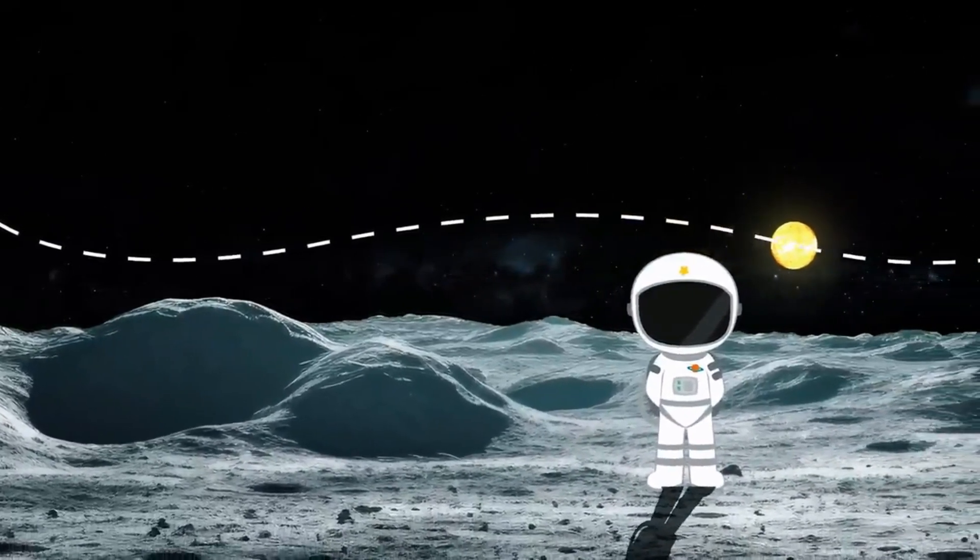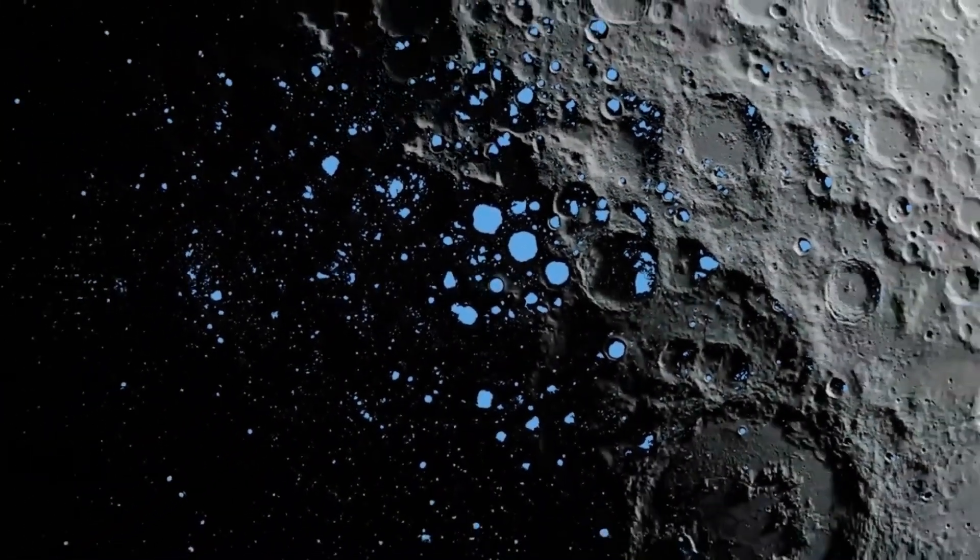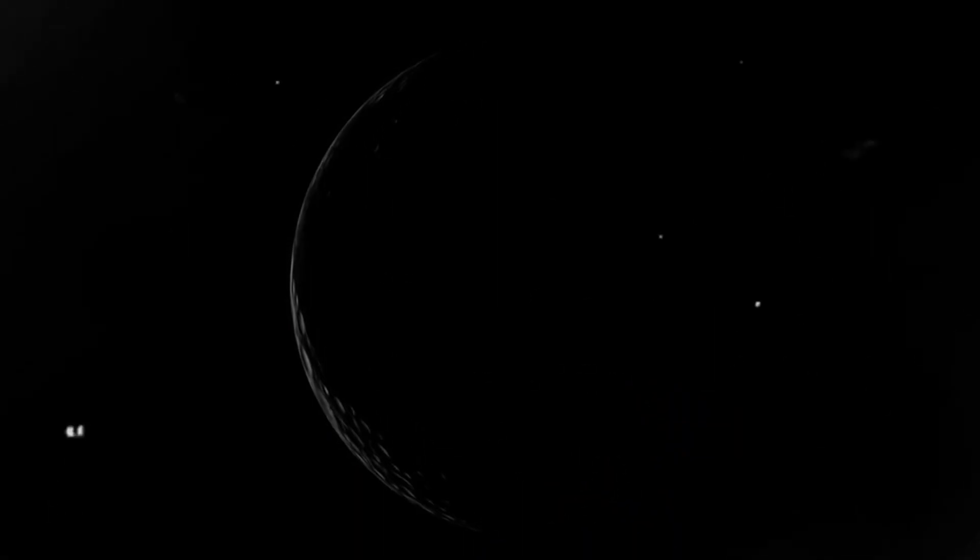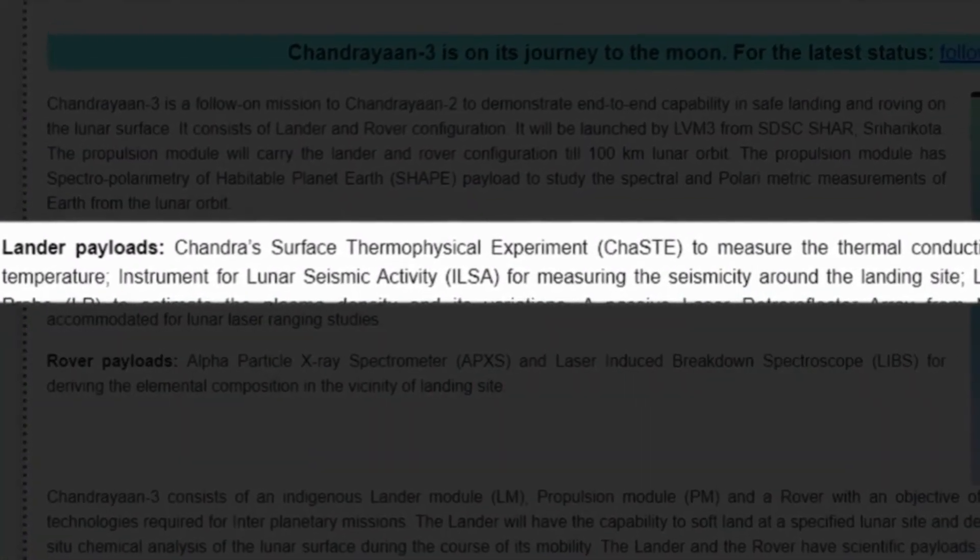Chandrayaan-3's main goal is to confirm the presence and distribution of water ice near the lunar south pole. To do this, it carries 14 scientific payloads on board its lander and rover, which measure various aspects of the lunar environment and resources.